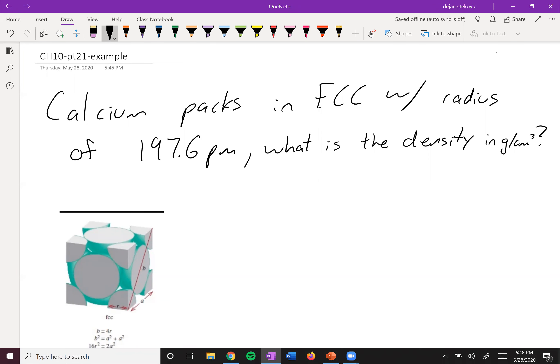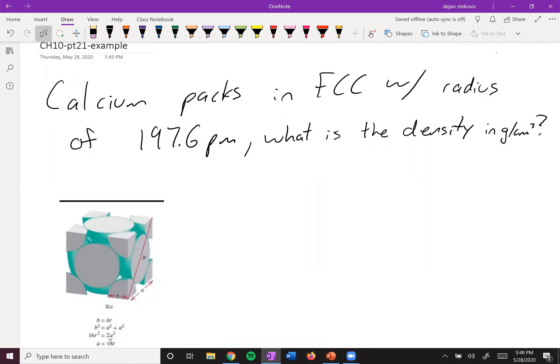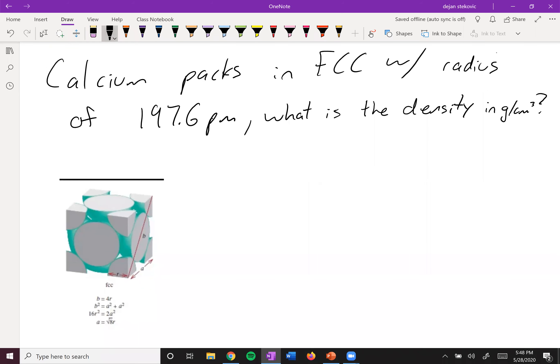All right, so here's an example. Calcium packs in face-centered cubic with radius of 197.6 picometers. What is the density in grams per centimeter cubed?